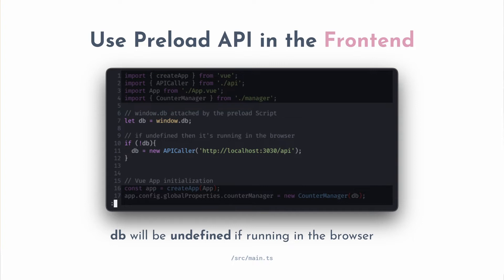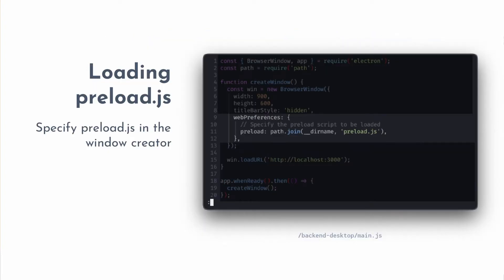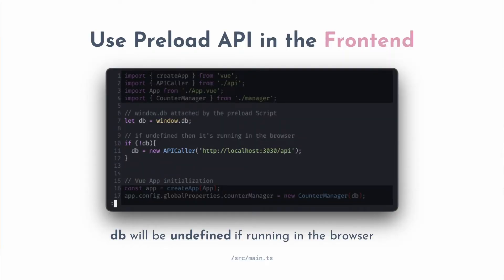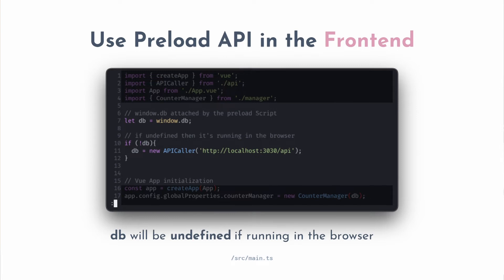For instance, invokers has read and update, and the API caller has read and update. To load the preload script, we update the Electron-specific code and give it the path of the preload script. Before the app loads the web front end, it will load the preload script and attach DB to window. If window.db is not defined, that means the app is not running on Electron. So the rest of your entire UI code can be oblivious to which platform it's running on — you just give it one particular API, and that API can have different implementations depending on whether it's running on Electron or in the browser.